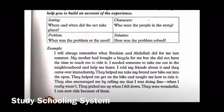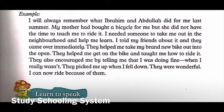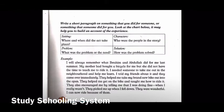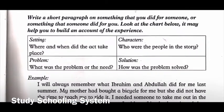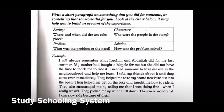Then the problem — what was the problem or need? The narrator did not know how to ride a bicycle. And the solution? They took him outside, helped him get onto the bike, taught him how to ride it, encouraged him by telling him he was doing fine, and picked him up when he fell down. This is how you will write a short paragraph — write it in your notebooks and make sure to answer these questions about any act of kindness.